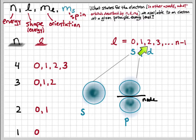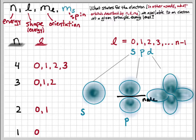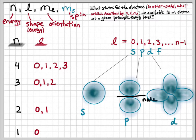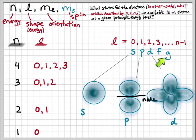When we go to l equals 2, we have a d orbital. The complexity of the shape is also increasing — the d orbital has a sort of double dumbbell shape. At l equals 3, that's an f orbital. The shapes are very complex but you can look them up. Past l equals 3, the trend continues and the letters just go in alphabetical order: f, g, and so forth.